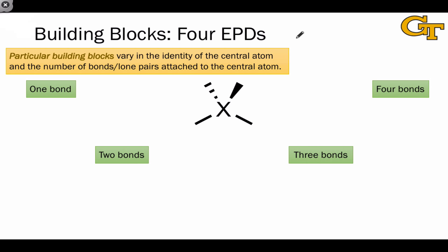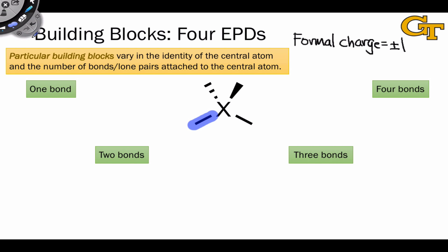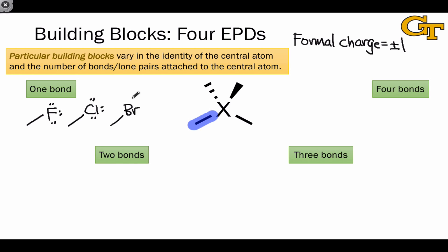Now let's start listing the particular building blocks that correspond to each generalized building block. To constrain the possibilities, we'll keep the formal charge of atoms at most plus or minus 1, since organic molecules don't display formal charges greater than that. When we arrange the tetrahedral building block with one single bond and three lone pairs, we end up with particular building blocks corresponding to neutral halogen atoms — fluorine, chlorine, bromine, or iodine — all with three lone pairs and one single bond.